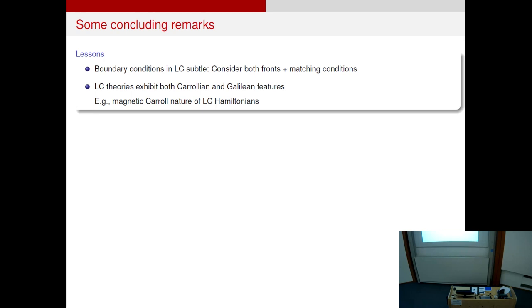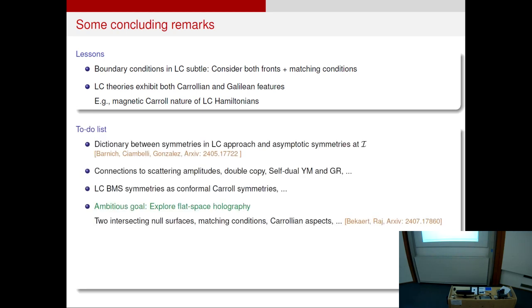This is my last slide. Thank you. So just to summarize a little bit, I went over it a bit fast. I apologize for that. But the two main lessons I think we learned from this is that to understand boundary conditions properly, we must consider both the fronts and the matching conditions. And light cone field theories are nice in the sense that you can see both Galilean and Carrollian features, depending on how you look at them. And, of course, there is a long to-do list of things to do. For example, building a dictionary between light cone symmetries and asymptotic symmetries and so on. There is a recent preprint where they have tried to do this a little bit. The ambitious goal is, of course, to explore flat space holography in this context.